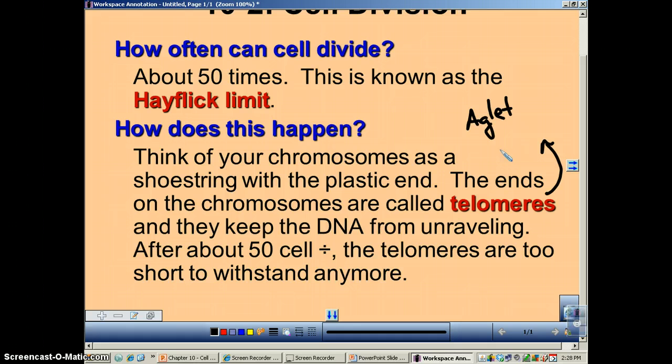And it's these aglets or telomeres—they keep getting shorter and shorter with each cell division. Eventually, it reaches a point that if it would divide one more time, that telomere would disappear, and the DNA would completely unravel. It would just fray, just like your shoestrings do.